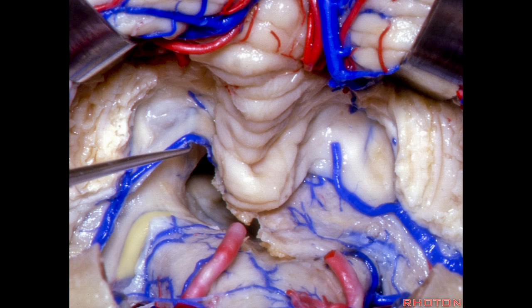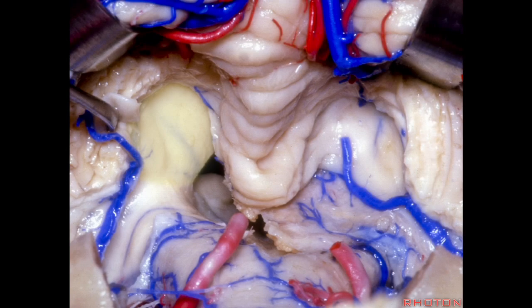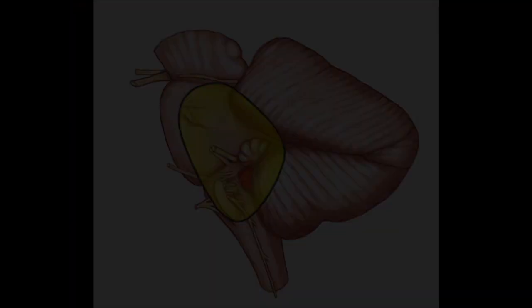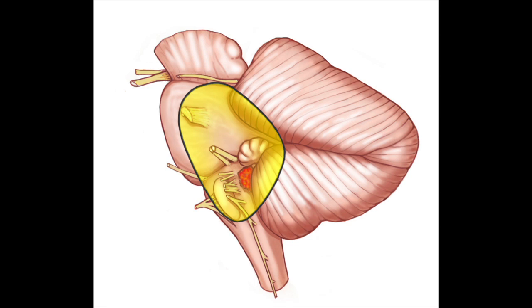Rather than dividing the vermis, we retract the tonsils away from the side of the uvula, open the telovular above Magendie to access the floor of the fourth ventricle, and open the velum to access the superior lateral recess. If pathology extends out the lateral recess, the roof of the lower half of the lateral recess is formed by tela and velum. We see the dorsal cochlear nucleus — the site of the auditory brainstem implant — in the lateral recess. Using the telovular approach, we have access to all of the floor of the fourth ventricle, the peduncular mass, superior lateral recess, and lateral recess.